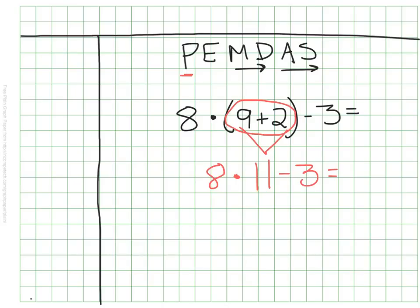The next thing I want to do is to see if there are any exponents. I don't see any, so I'm going to skip that. And I'm going to move on to my multiply and divide. In this case, there happens to be multiplication, but no division, so I'll just go ahead and do my multiplication. I'm going to circle that and make a little snow cone here. 8 times 11 would be 88, and I'm going to rewrite what is left.